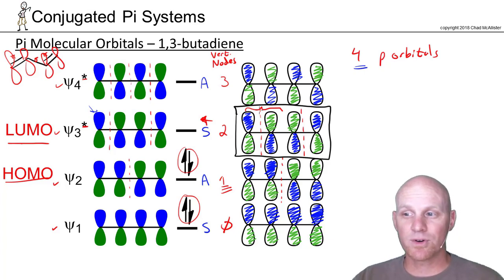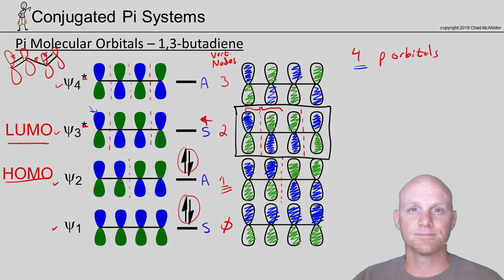So that's kind of the general approach here. You do have to know how to draw them all, but most likely on a test, you probably got to draw one specific molecular orbital for a given conjugated system.